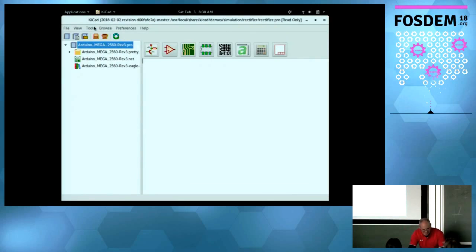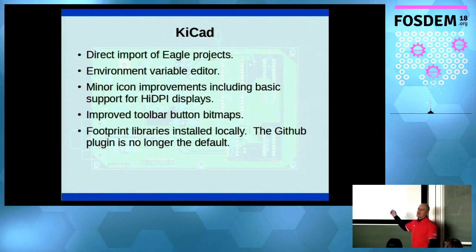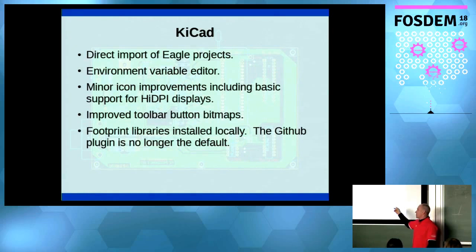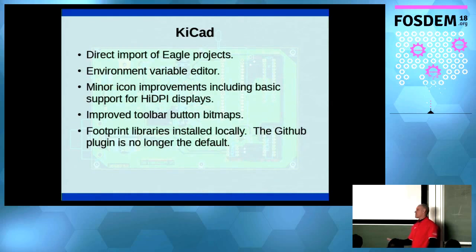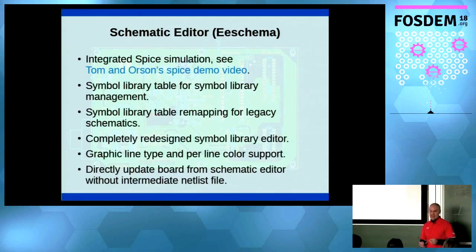Another change with v5 is that instead of the GitHub plugin, which we currently use as the default, the footprint libraries will be installed locally on your hard drive. You can still use the GitHub plugin, but if you're interested in newer footprints you'll want to change your global footprint library table to point to the new local footprints. The GitHub libraries are basically deprecated — we'll keep them for historical purposes, but all new development is being done in a single Git repo, which makes it easier for library developers.